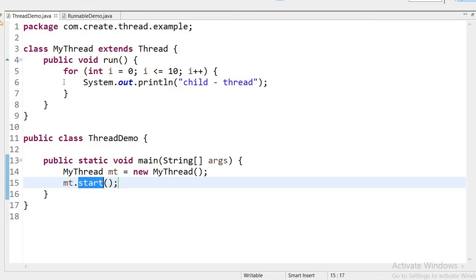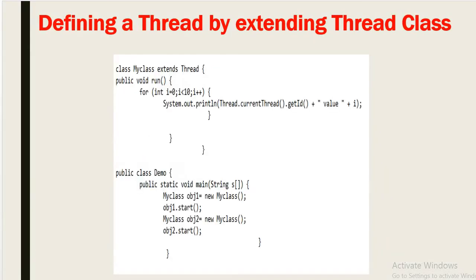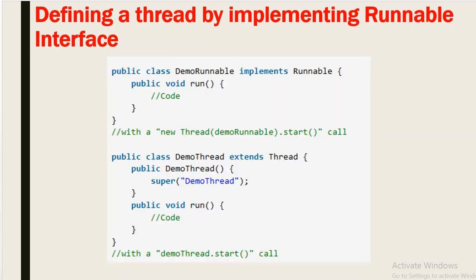Now for the second approach: defining a thread by implementing the Runnable interface. First we need to create a class and implement the Runnable interface, then override the run() method. We then create a Thread object passing our Runnable object, and that thread will execute our run() method. Let us see this in the code.